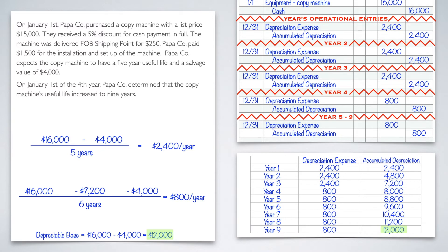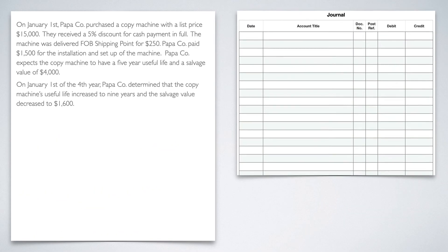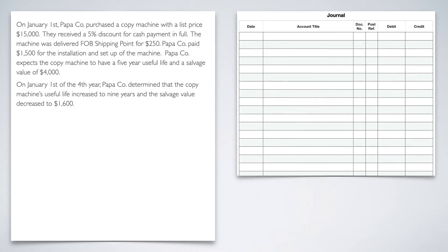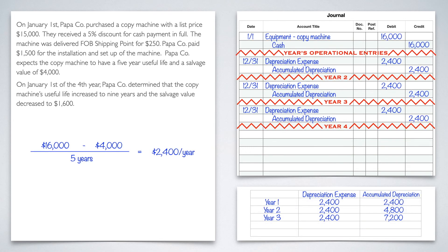Now that's how you recalculate if the useful life changes. What happens if the salvage value is changed as well? Let's look at another example. Same thing — we're back at Papa Company, same intro. But this time, on January 1st of the fourth year, Papa Company determined that the copy machine's useful life increased to nine years and the salvage value decreased to $1,600. So both the useful life and the salvage value have changed. Everything up to this point is still the same because nothing changed until the fourth year. So now we're in year four and need to do the recalculation again.